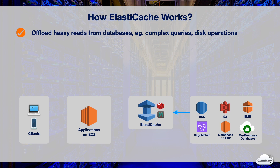ElastiCache is the in-memory datastore that sits between your application and the database. It can be used with AWS data stores and services such as Amazon S3, RDS, EMR, SageMaker, and databases running on EC2 and on-premises servers. You can use ElastiCache to store popular queries in memory, such as your top-selling products. When users request information about top-selling products, the application servers read data from ElastiCache instead of the database.